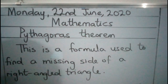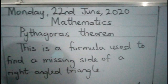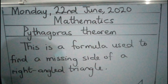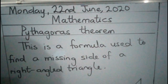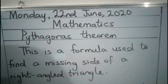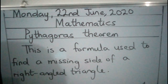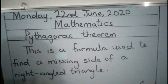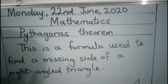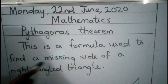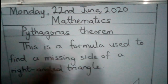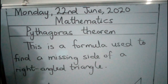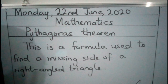Like I told you, we are taking a new topic today which is Pythagoras Theorem. Pythagoras Theorem is something we use to find a particular side of a right-angled triangle. So what is Pythagoras Theorem? This is a formula or a theorem used to find a missing side of a right-angled triangle.